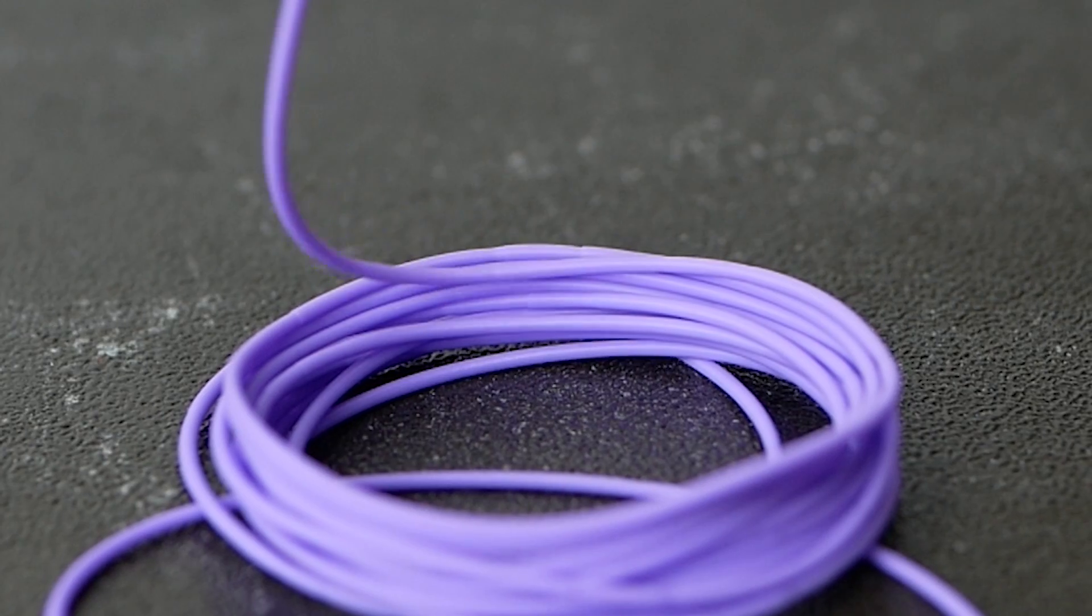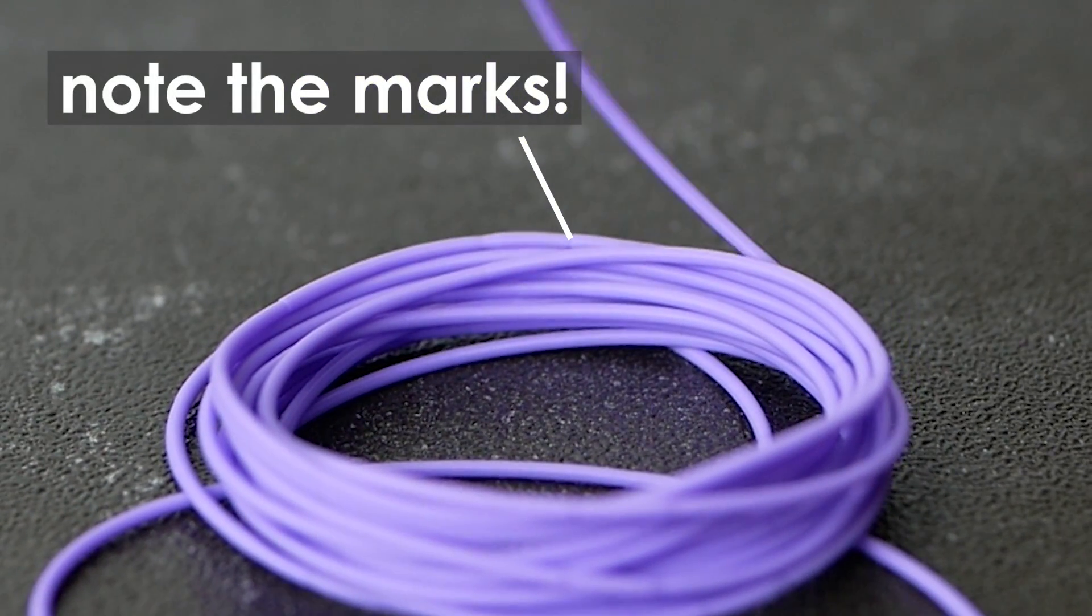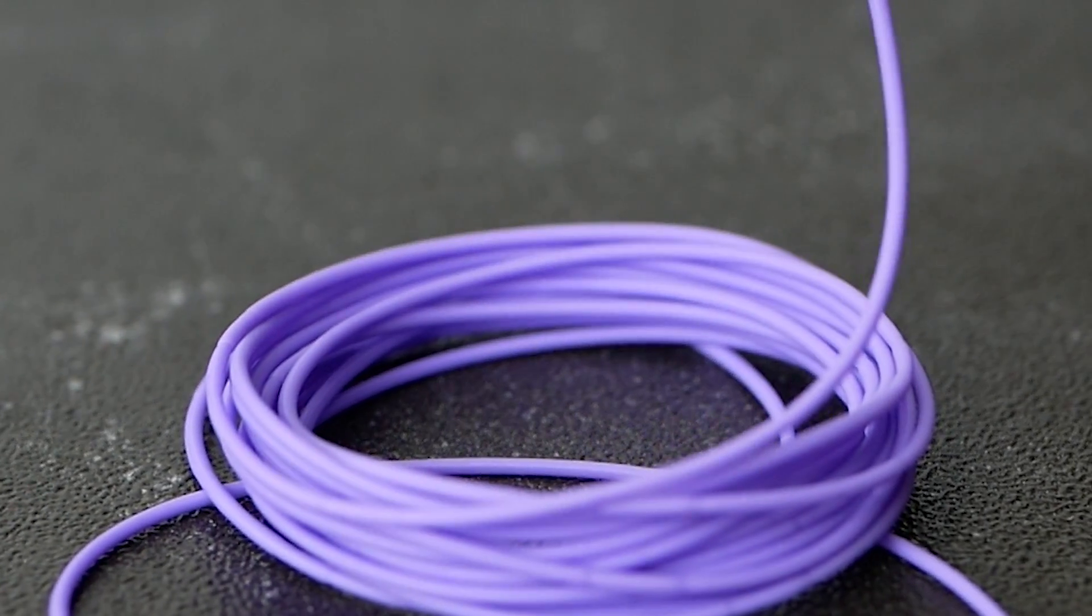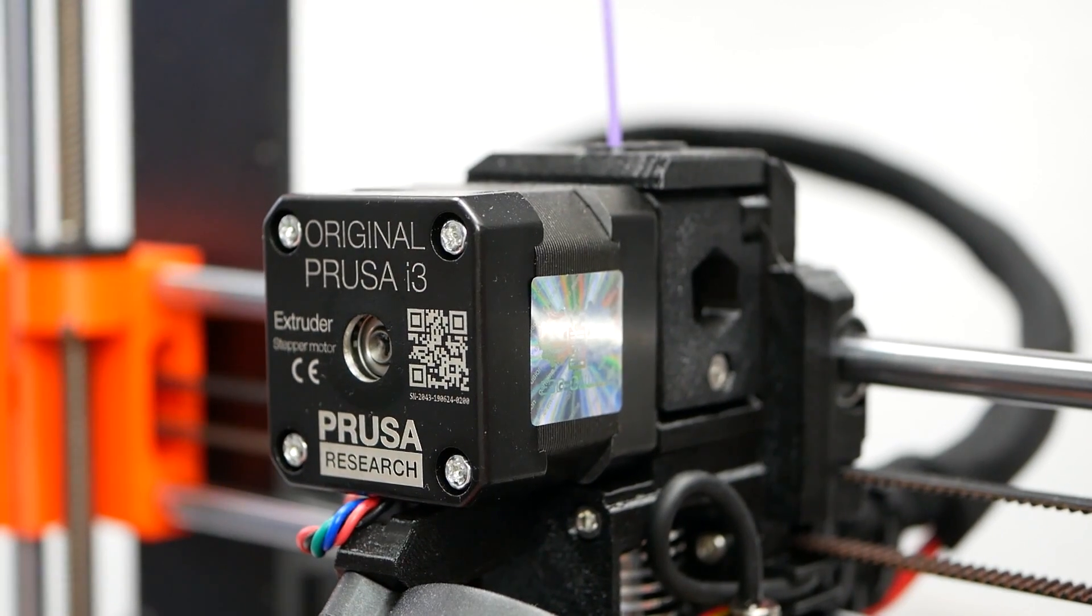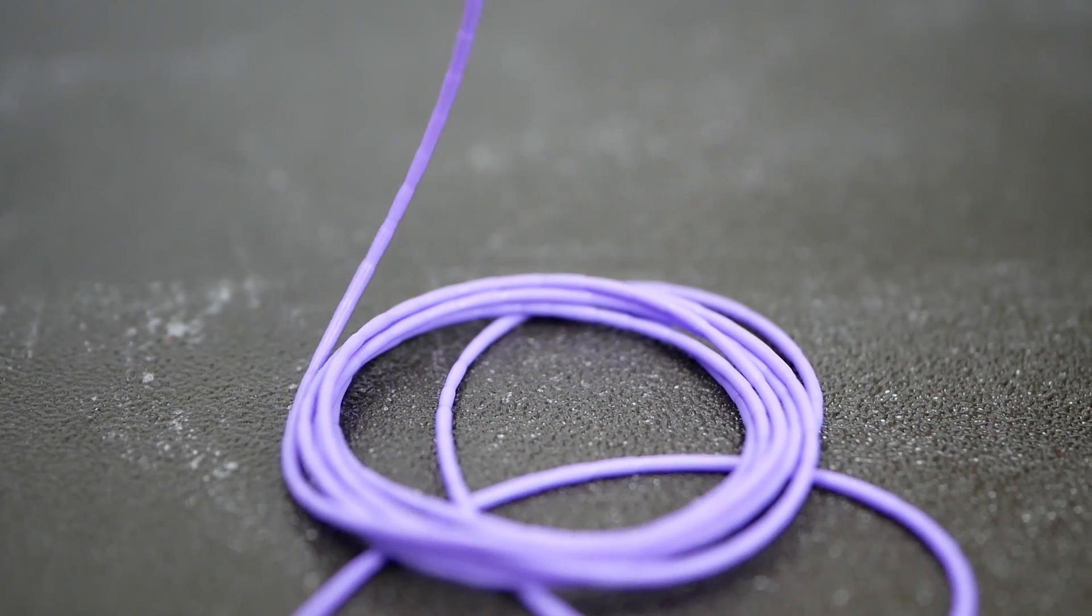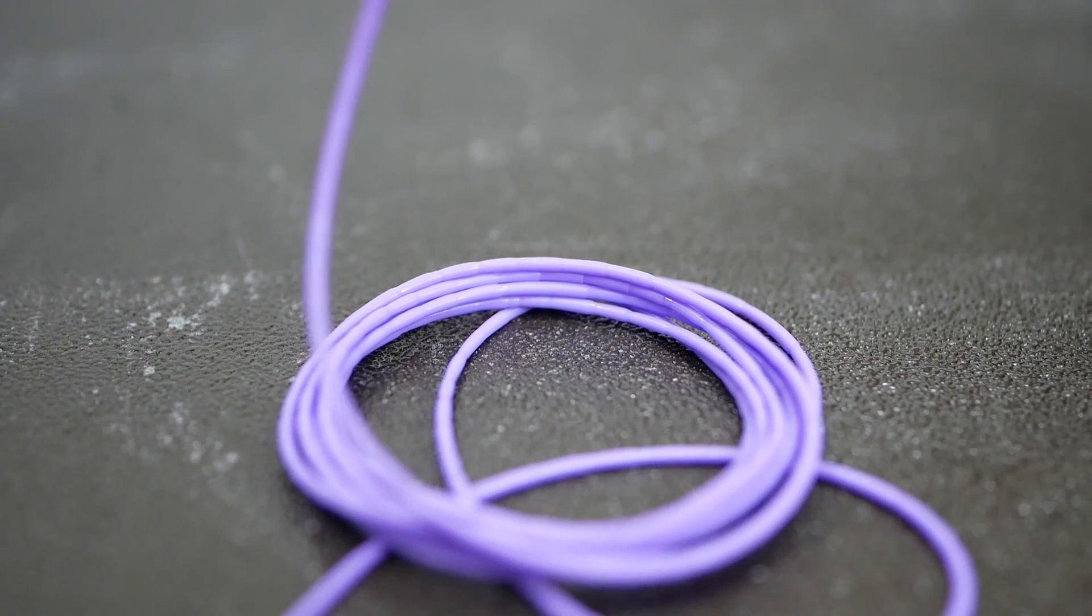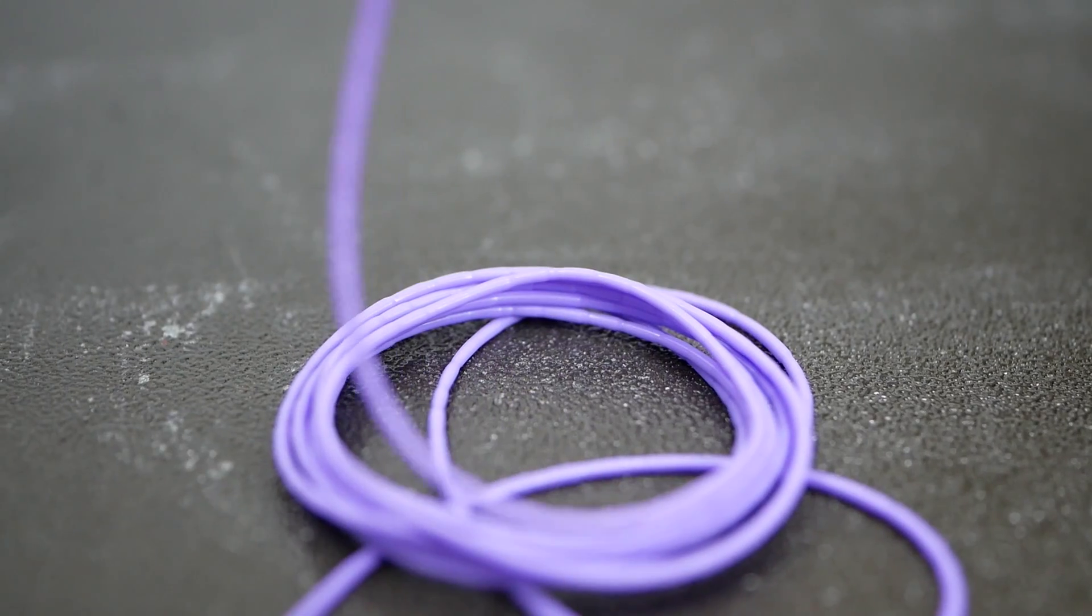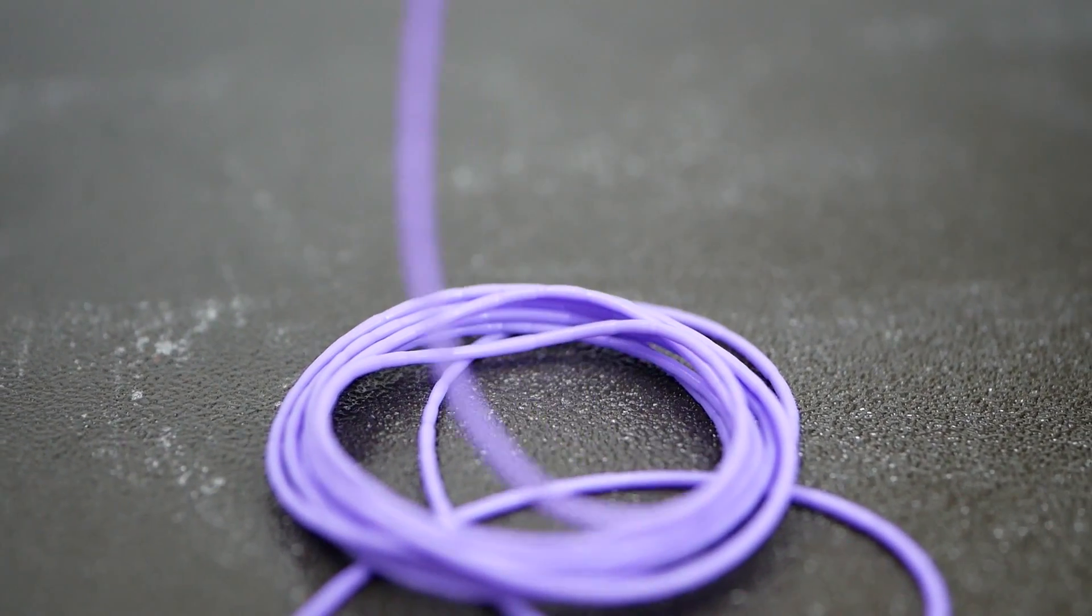At some point, with my particular setup which is a Prusa i3 Mark III S with the E3D V6 hotend, the filament starts skipping from time to time. This was at 15mm³ per second extrusion rate and would be equivalent to 0.3mm layers with a 0.4mm nozzle at 100mm per second. Increasing it higher made it skip even more often.